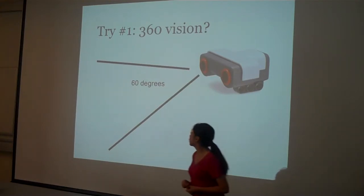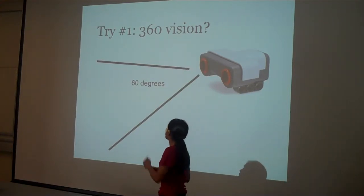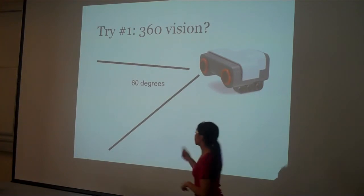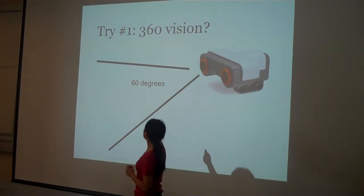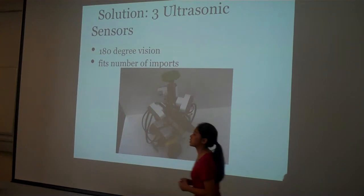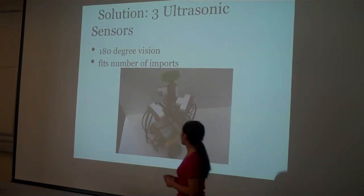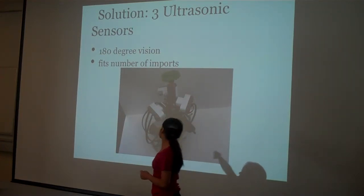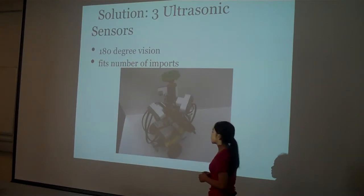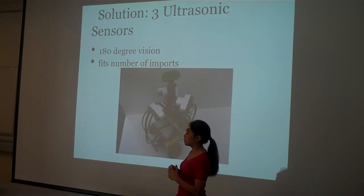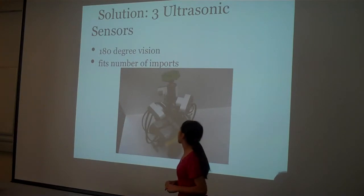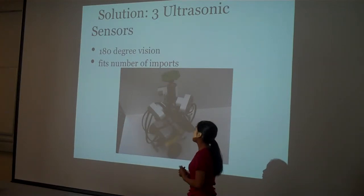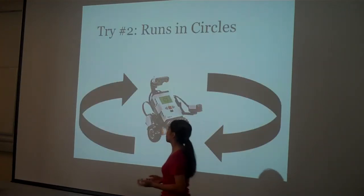And so I tried to do, I tried to get 360 vision but I realized that the sensors only see 60 degrees each. So what I had to do was I had to only have three sensors because there's only four inputs on the brick. So now I only have 180 degree vision. Although I would love to have 360.